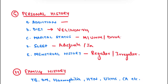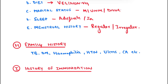Coming to family history — ask if there is a history of tuberculosis, diabetes mellitus, hemophilia, or hypertension in the family. Certain diseases are chromosomal in nature or can be acquired from close family members, so family history plays a very important role.